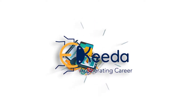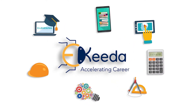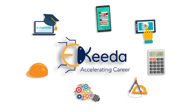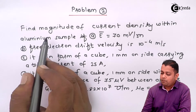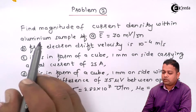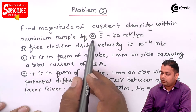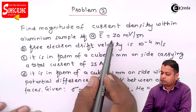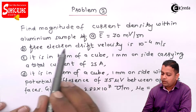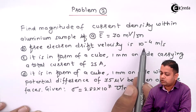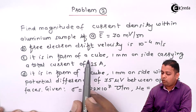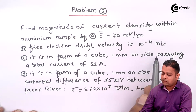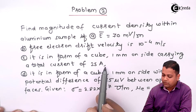Let us take one more problem where electric field intensity is given to us and we are asked to derive the current density from that. We also have different values of drift velocity and charge configurations. So let us see problem number two. The statement of problem number two is: find magnitude of current density within an aluminium sample. Part A: E-bar is equal to 7 millivolt per meter.